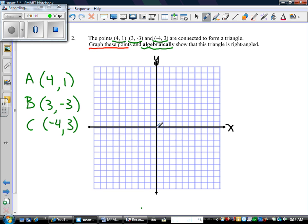So here's point A, 4, 1. And I'll call it A. B is 3, negative 3. And C is negative 4, 3. See, the fact that I gave them names made it easier for me to talk about what I was doing.